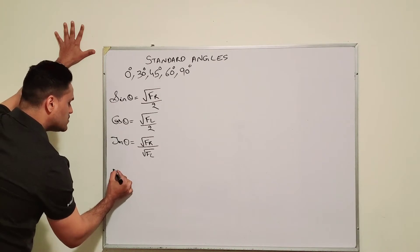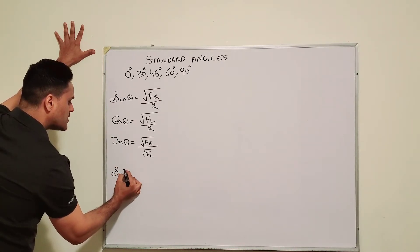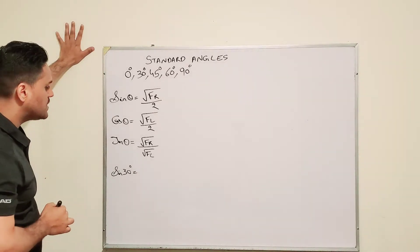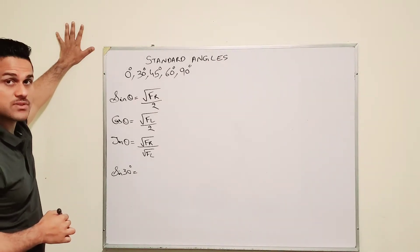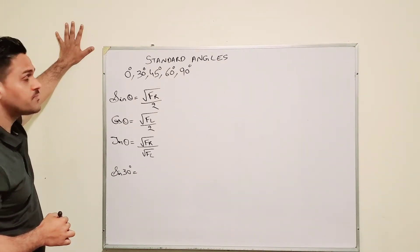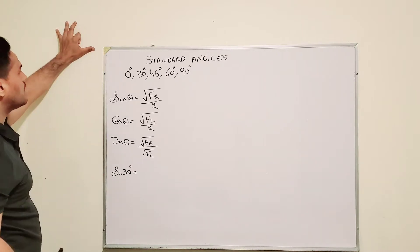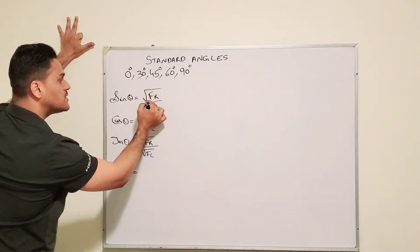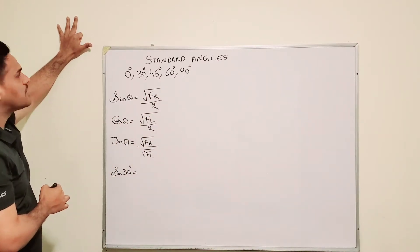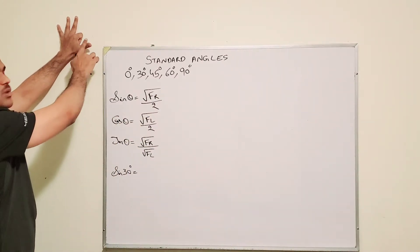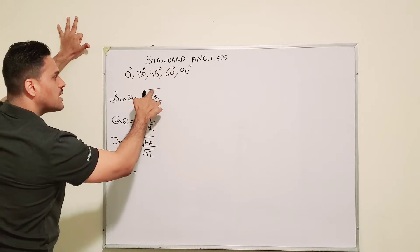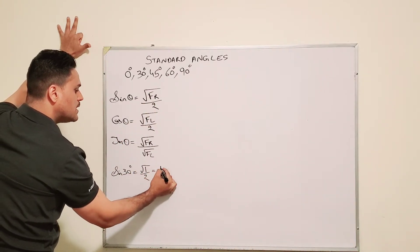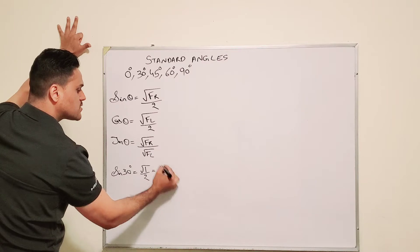Let's say I asked you to find sine 30 degrees. If we were trying to find sine 30, you would first bend your 30 degree finger. The formula for sine is square root of fingers on the right over 2. Ask yourself: how many fingers are on the right? I only see one finger on the right, so we plug in 1. That gives me square root of 1 over 2, which is just 1 over 2.